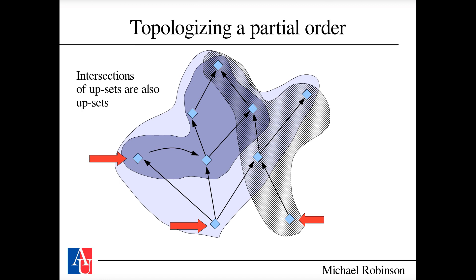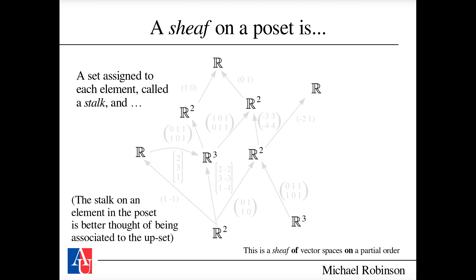The intersection of upsets is itself an upset or a union thereof, so the topology is well-behaved under intersections. A sheaf on a partial order assigns an object or set to each element — called the stalk over that element. In the Alexandrov topology there is a notion of a star: the smallest open set containing a given element. The stalk at any element is the set assigned to that upset.